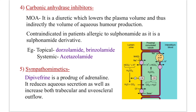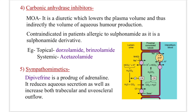Fifth class: sympathomimetics. Dipivefrin is a prodrug of adrenaline. It reduces aqueous humor secretion and increases both trabecular and uveoscleral outflow — making it the only drug that performs all these actions. To remember the five classes for open-angle glaucoma, use the mnemonic A-B-C: A for alpha-2 agonist, B for beta blocker, C for carbonic anhydrase inhibitor, plus prostaglandin analogs and sympathomimetics.